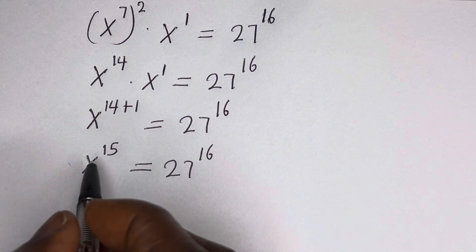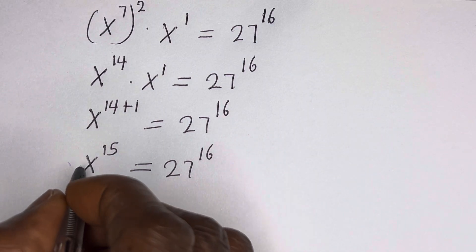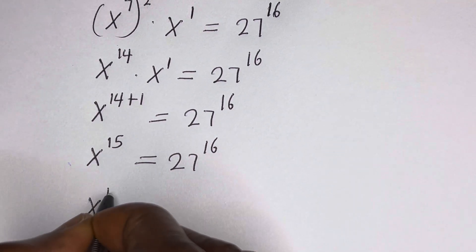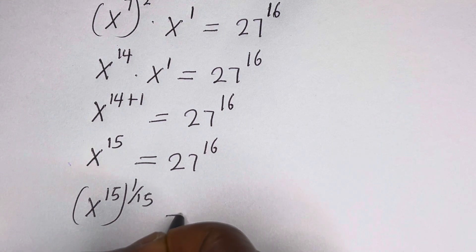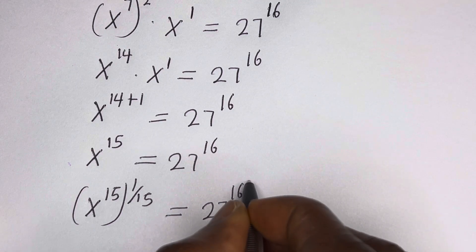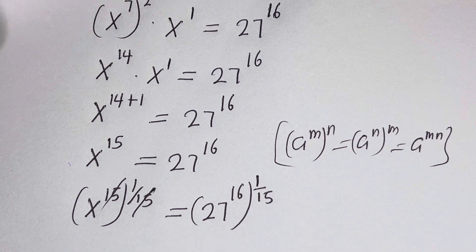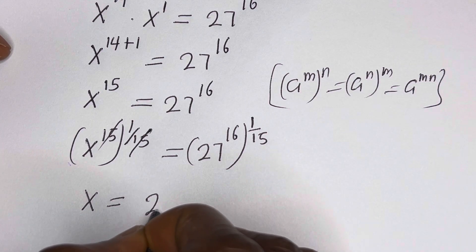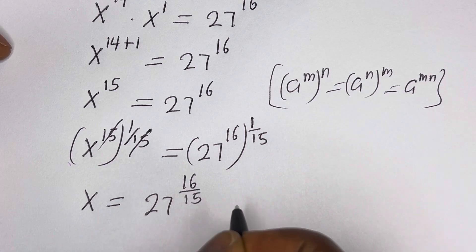Here we have S raised to power 15 is equal to 27 raised to power 16. At this point let us multiply the exponent of both sides by 1 over 15, because we are looking for the value of S. So this is S raised to power 15 to the power of 1 over 15, is equal to 27 raised to power 16 to the power of 1 over 15. Then we have S is equal to 27 raised to power 16 over 15.